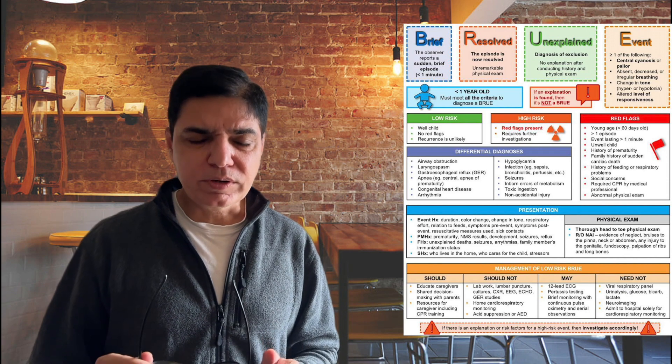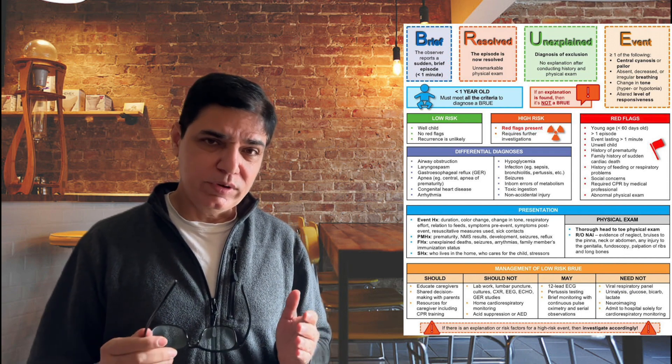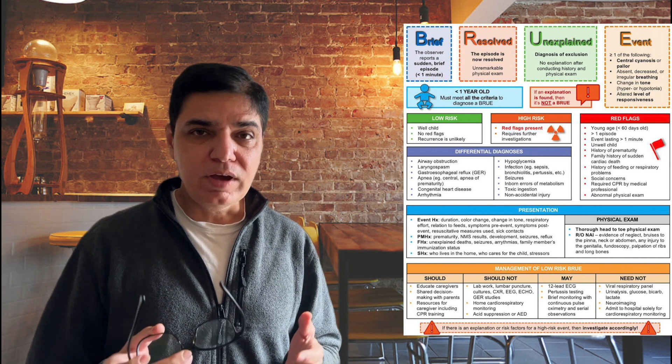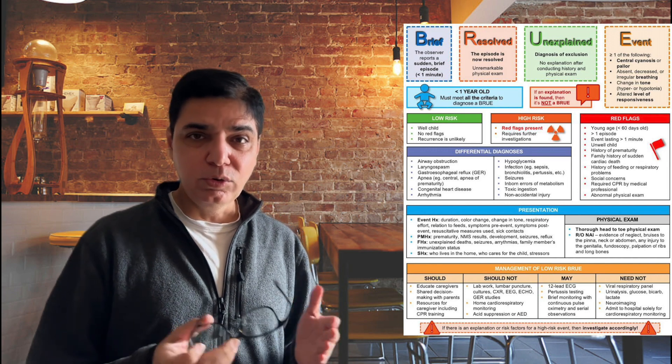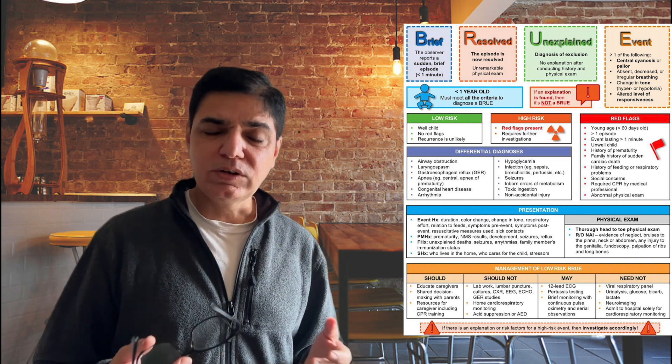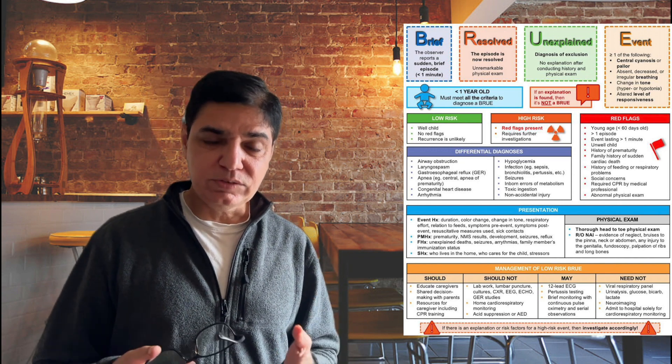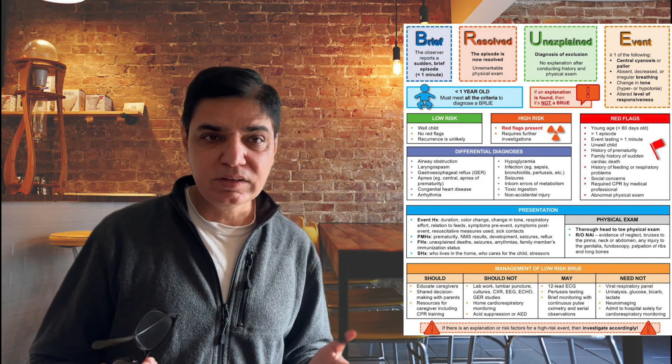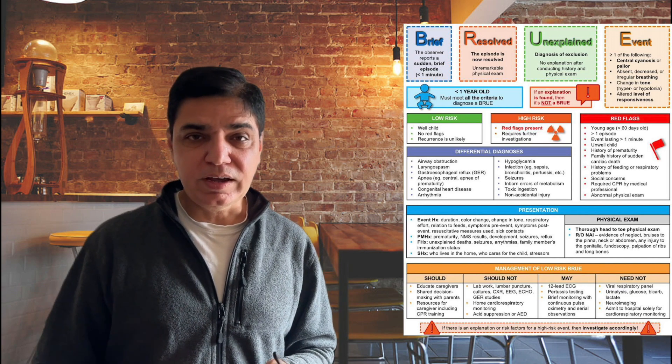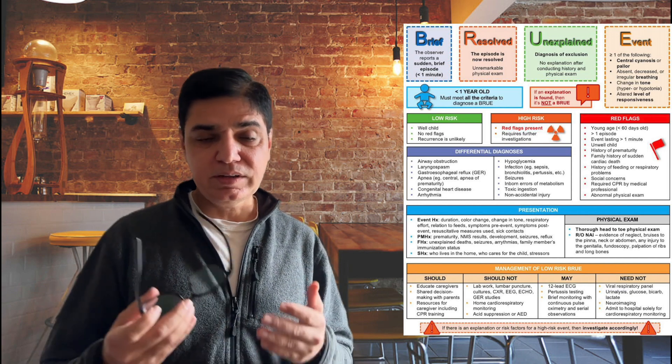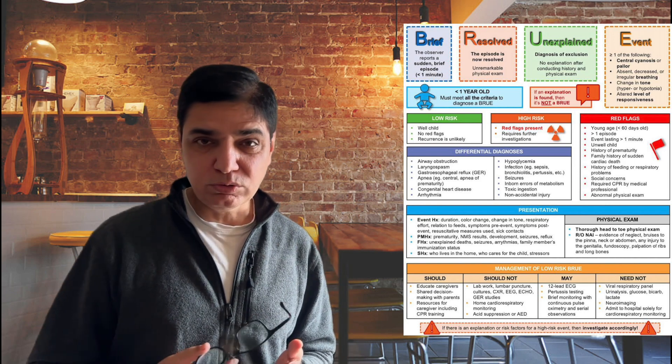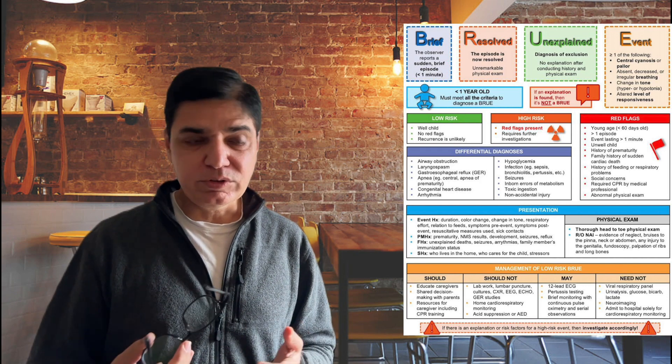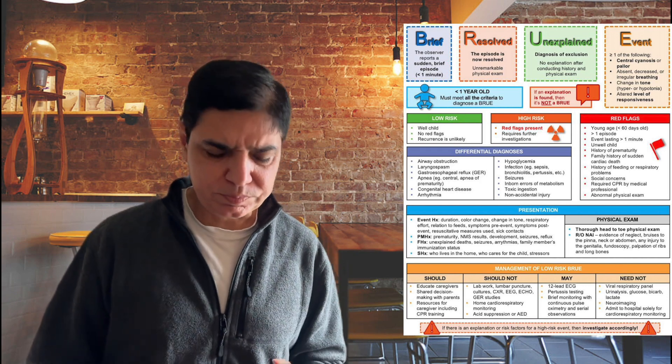Now it is also important that you classify. If you get a case where the presentation is of BRUE, you have to first of all classify whether this is a low risk event or a high risk event. Now what is a low risk event? A low risk event is where the child is otherwise very well on examination, there are no red flags, and you think that recurrence is very unlikely. A high risk child means where the red flags are present. Any moment I will go through those. What are those red flags? Or it's a presentation which has resolved but requires further investigations.